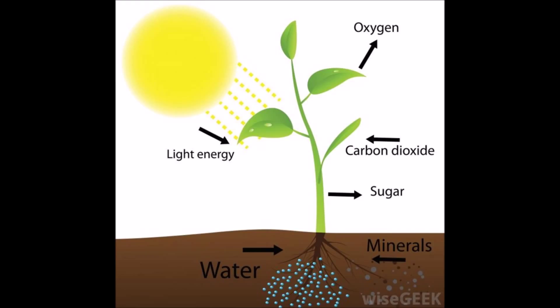Why do we need photosynthesis? Because plants produce oxygen. The water goes up the roots and goes to the leaf, that pops out oxygen, and also carbon dioxide makes glucose.